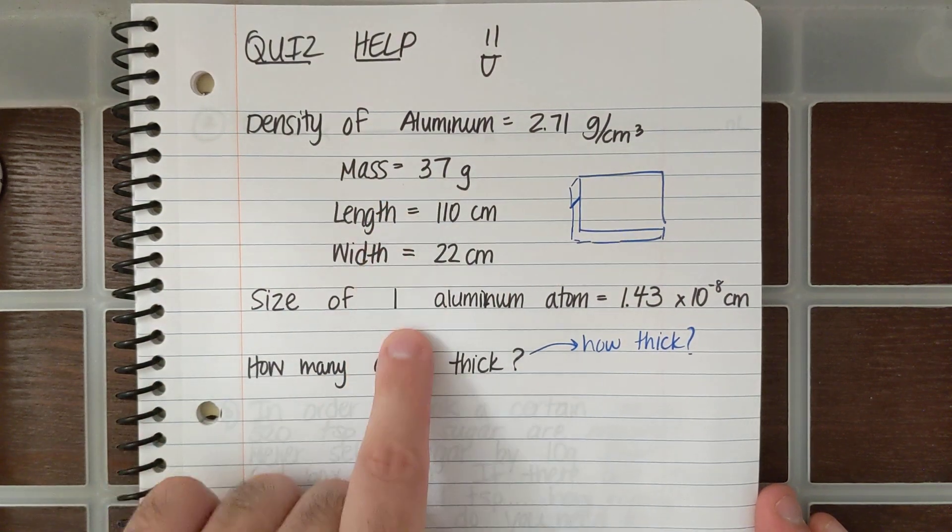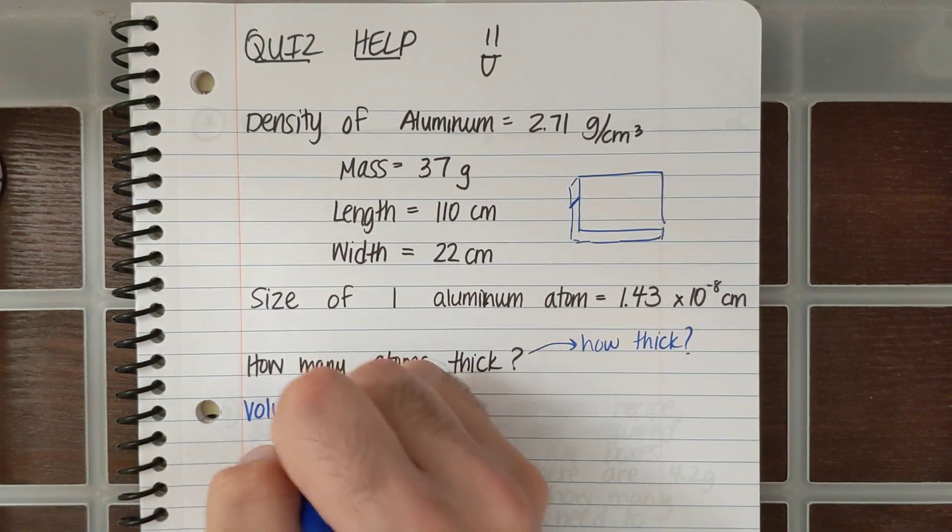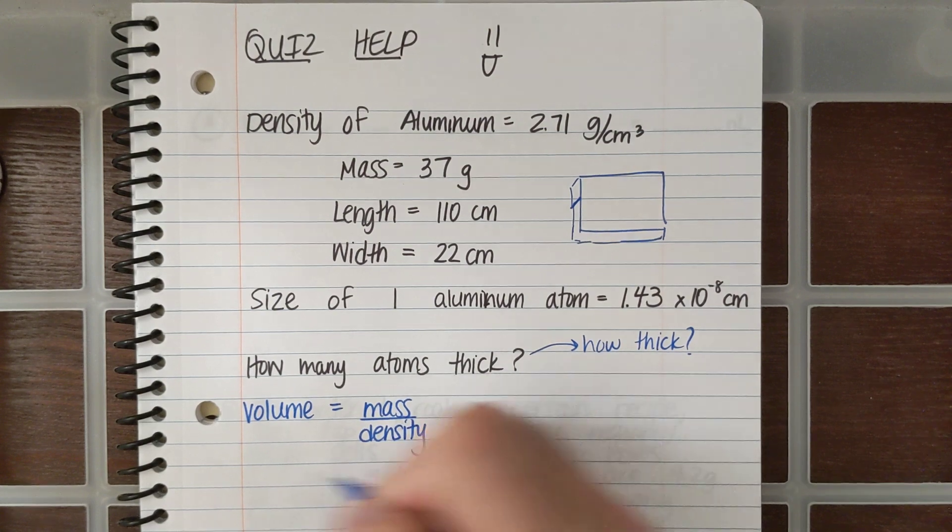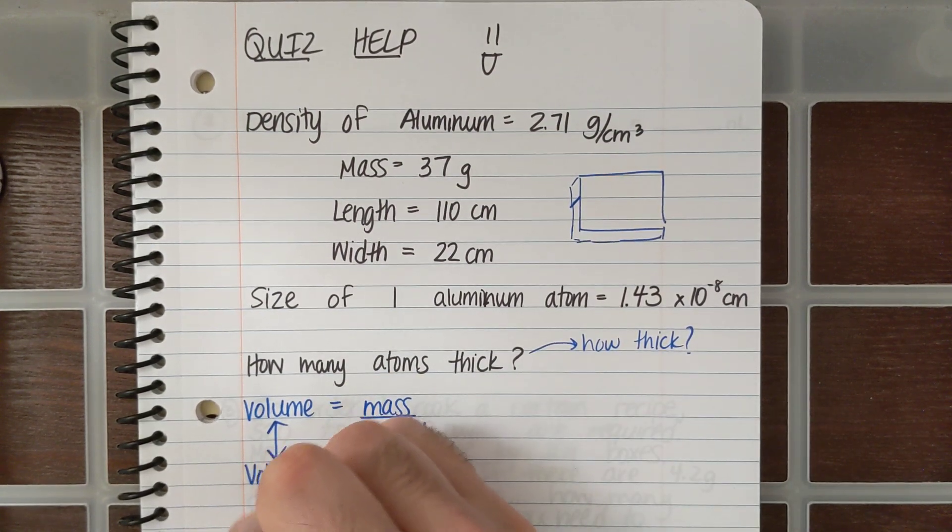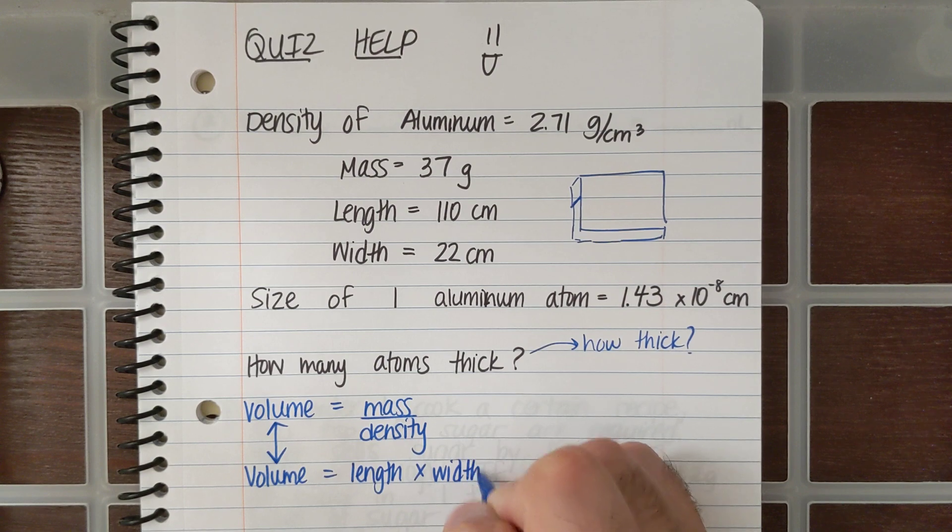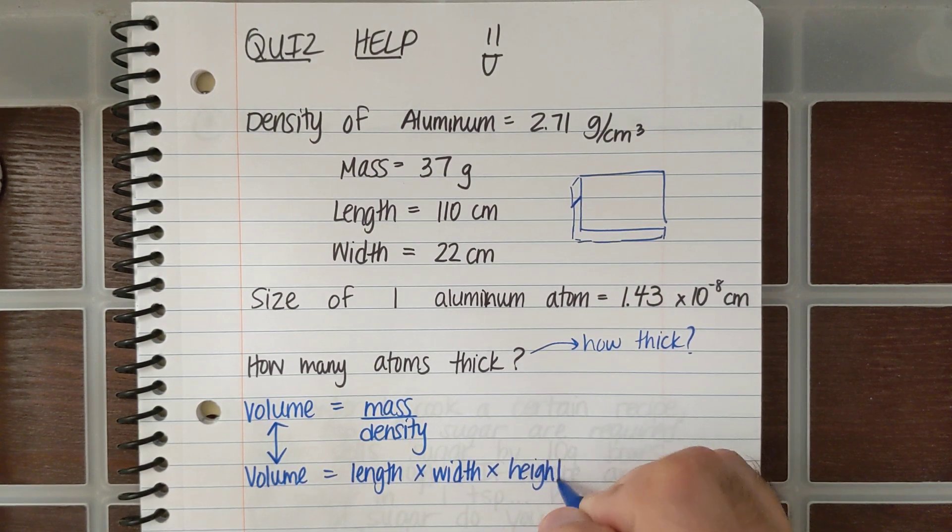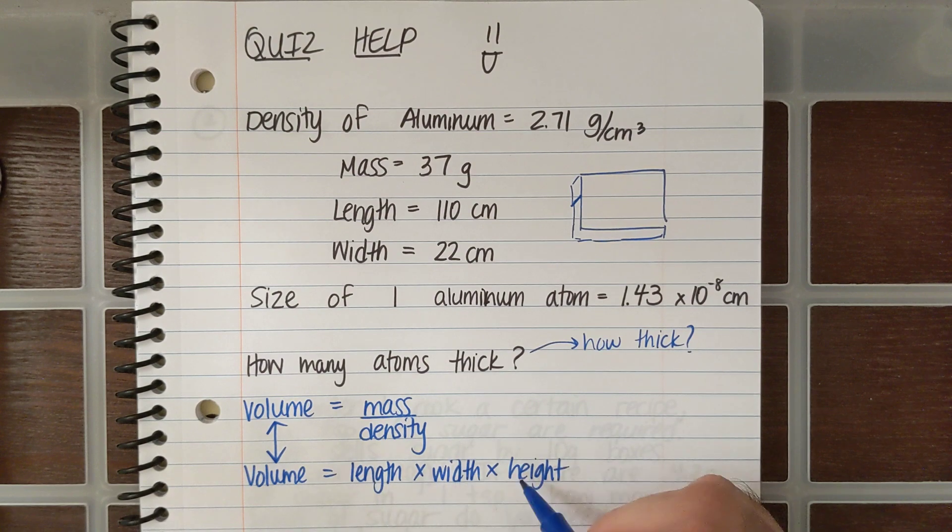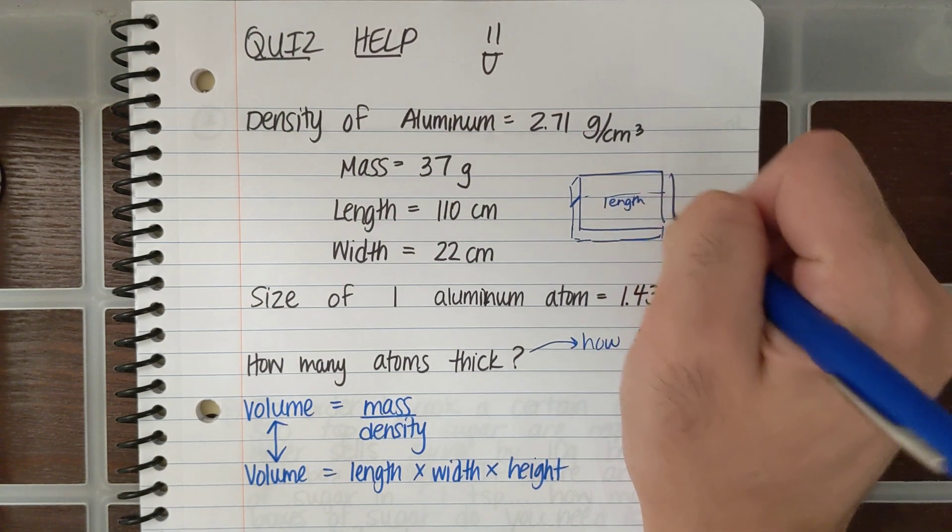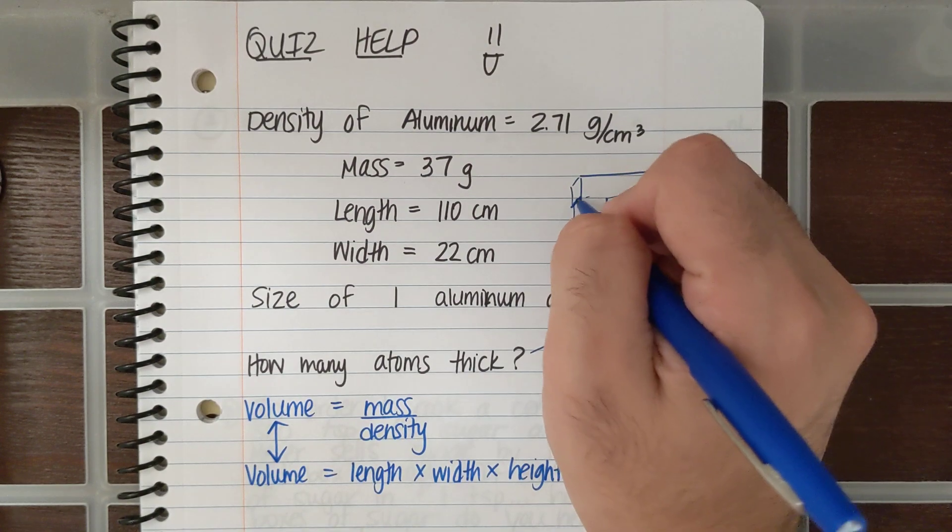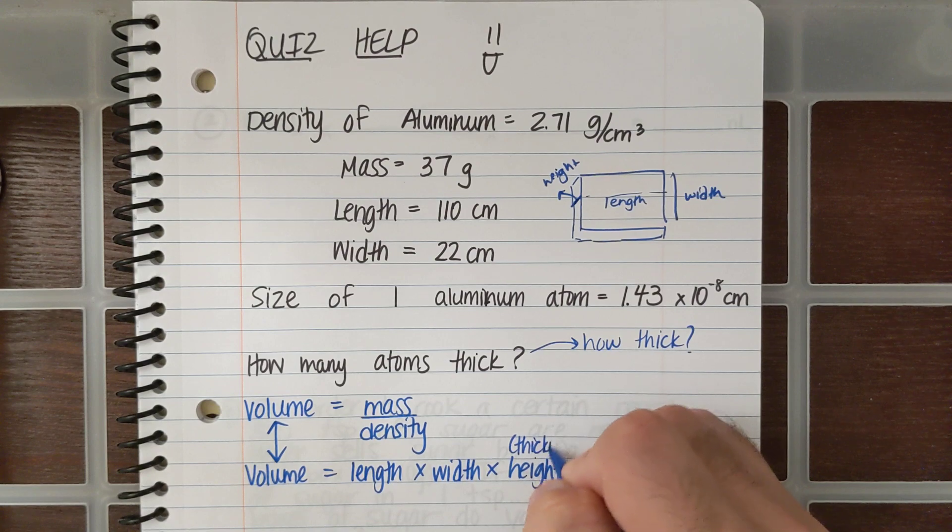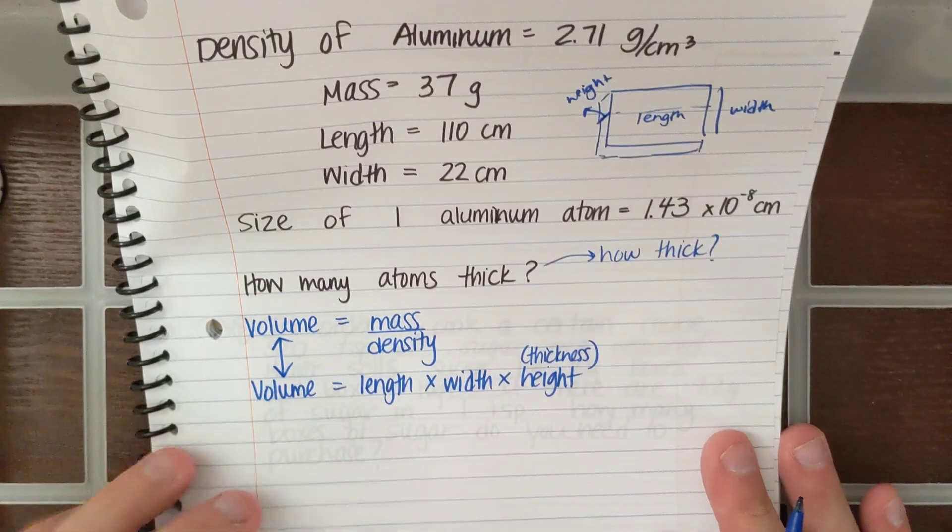Now remember, I have the density and I have the mass, and I have the length and width. So volume is equal to mass over density, and that same volume is going to be equal to length times width times height. And so if this is the length and this is the width, this thickness is the height. So height is also going to be thickness. We talked about this in class and you had your formative quiz on that.